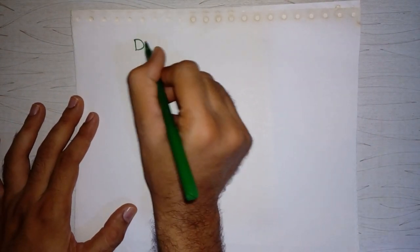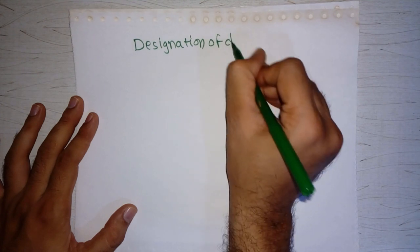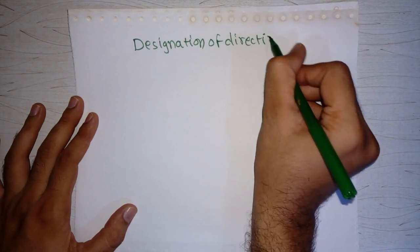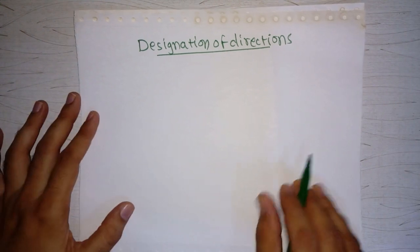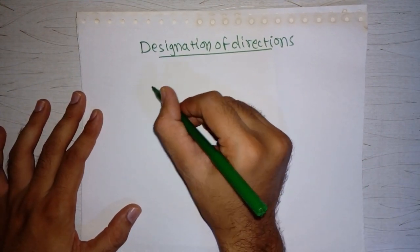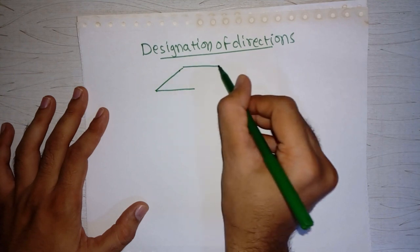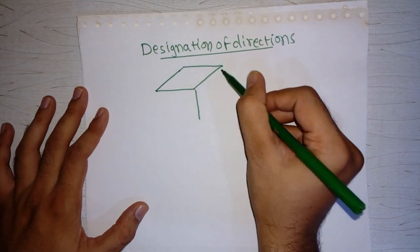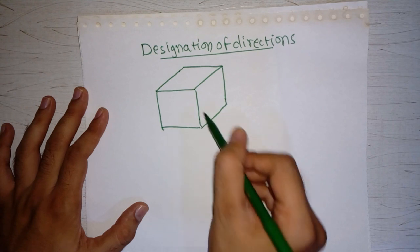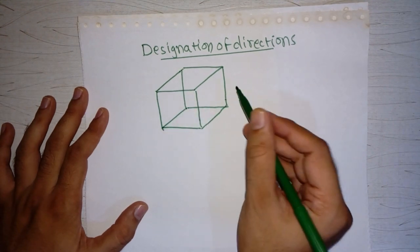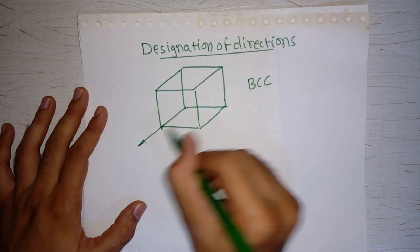Let's continue our discussion on designation of directions. Let's take some examples. We have a cubic unit cell — this is a BCC cell — and we are considering this orientation.